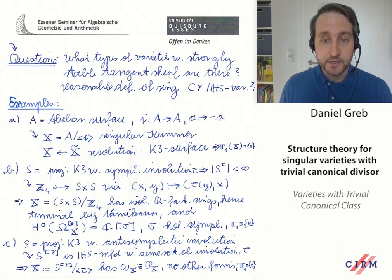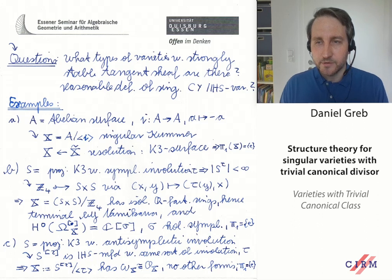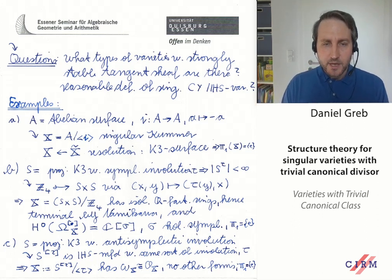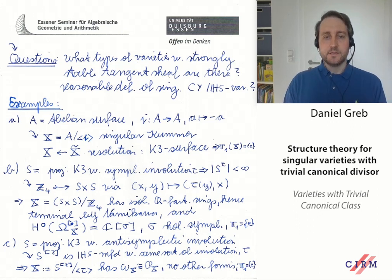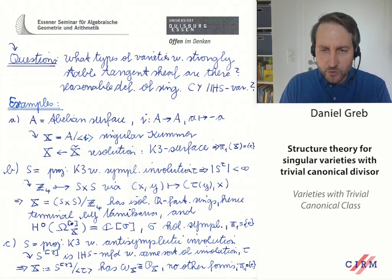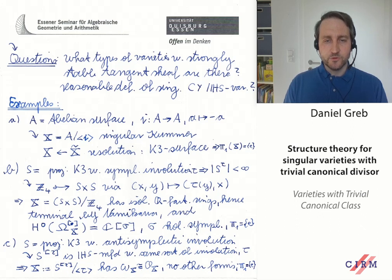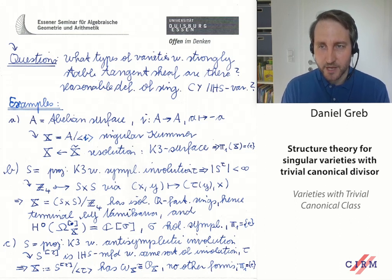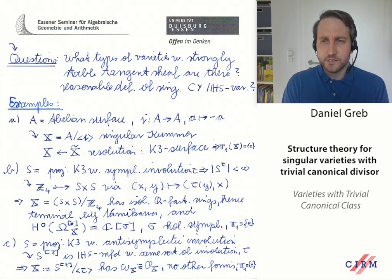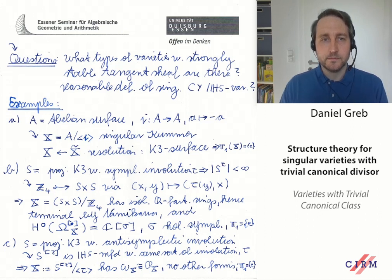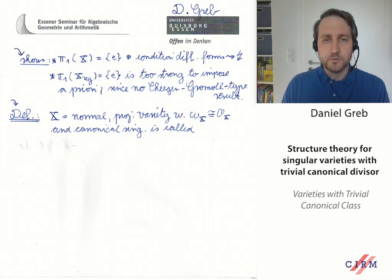Third example: start with a projective K3 surface S with an anti-symplectic involution τ. Look at the Hilbert scheme of two points S^[2], which is an irreducible holomorphic symplectic manifold with an induced involution τ. Take X = S^[2] / τ. This has trivial canonical sheaf, no other forms, and is simply connected — so it looks like a Calabi-Yau on X. But if you go up to the quasi-étale cover, it's an IHS.